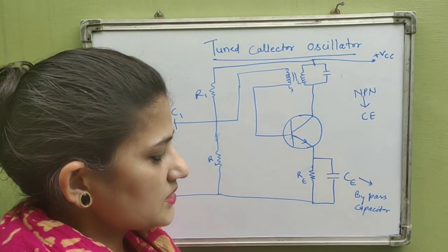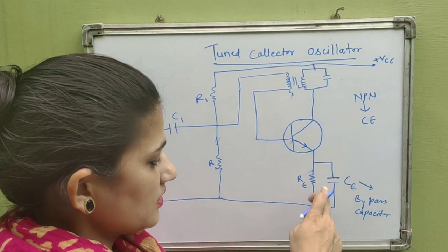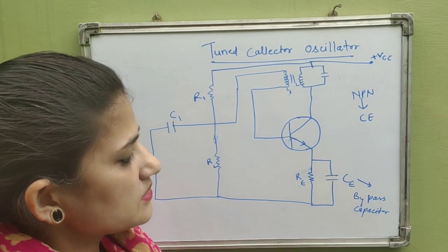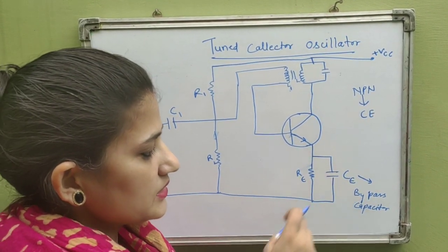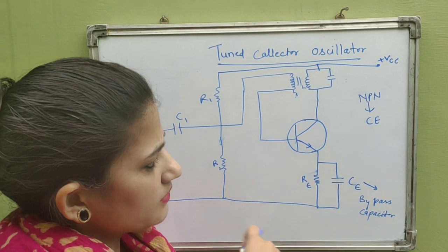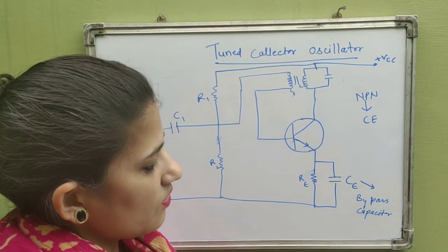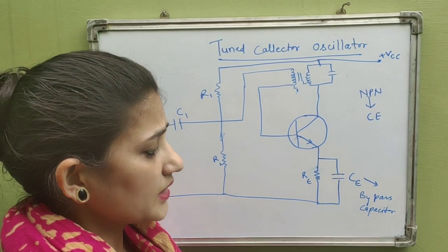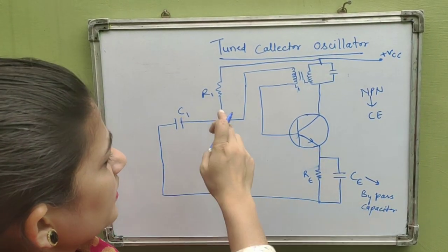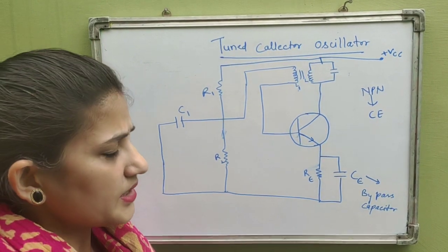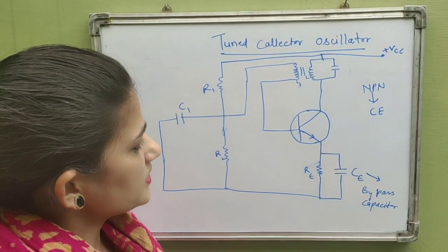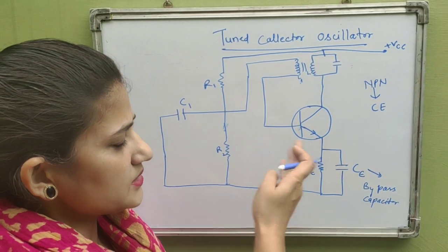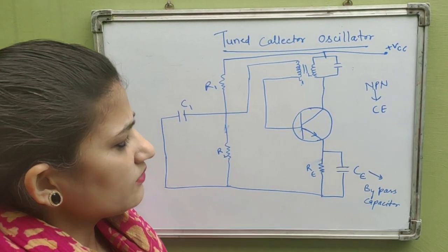The capacitor CE is the bypass capacitor, which passes the AC signal that is fed back to the input of the transistor. If CE is not included, the gain of the transistor decreases, producing degeneration as in negative feedback. R1 and R2 form the potential divider biasing. If the transistor is replaced, the gain will change.